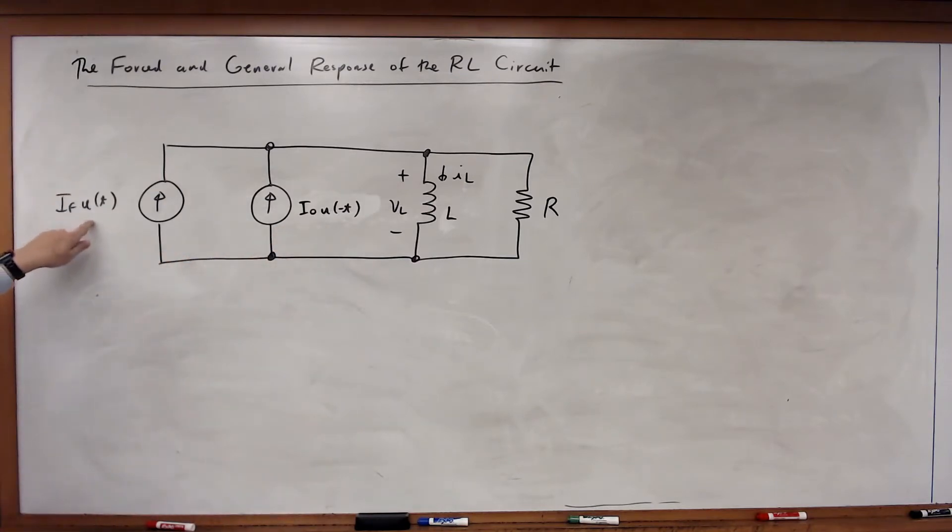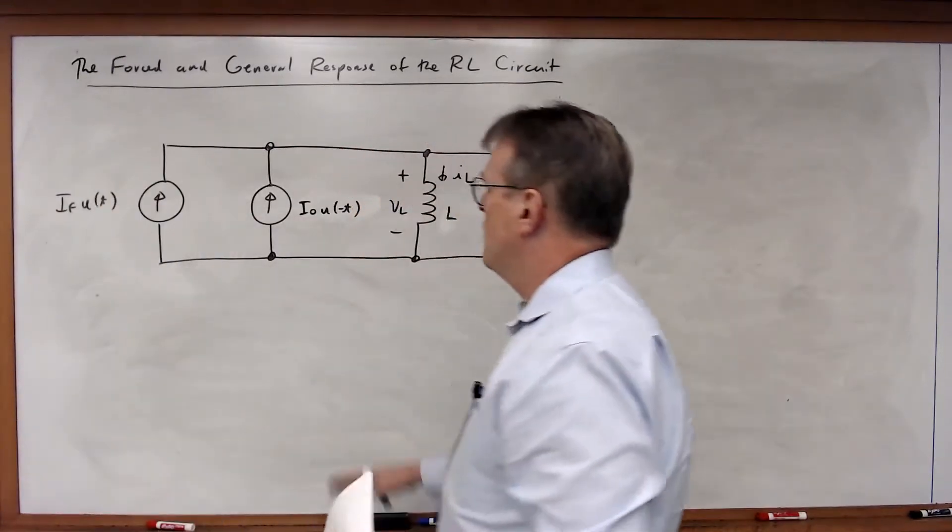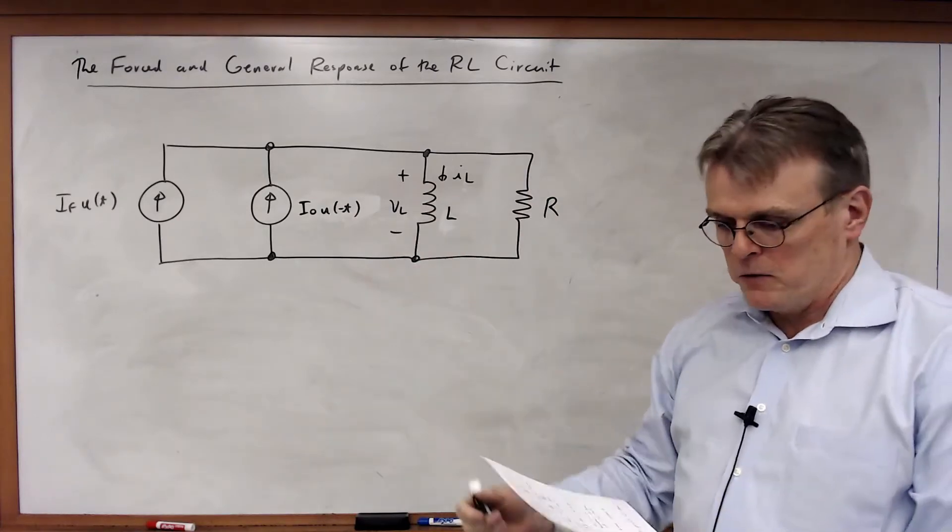I've got IF times u of t, this will be on for t greater than 0. So these two sources will alternate, and once again, we're going to do a very similar type of analysis we did for the RC circuit.